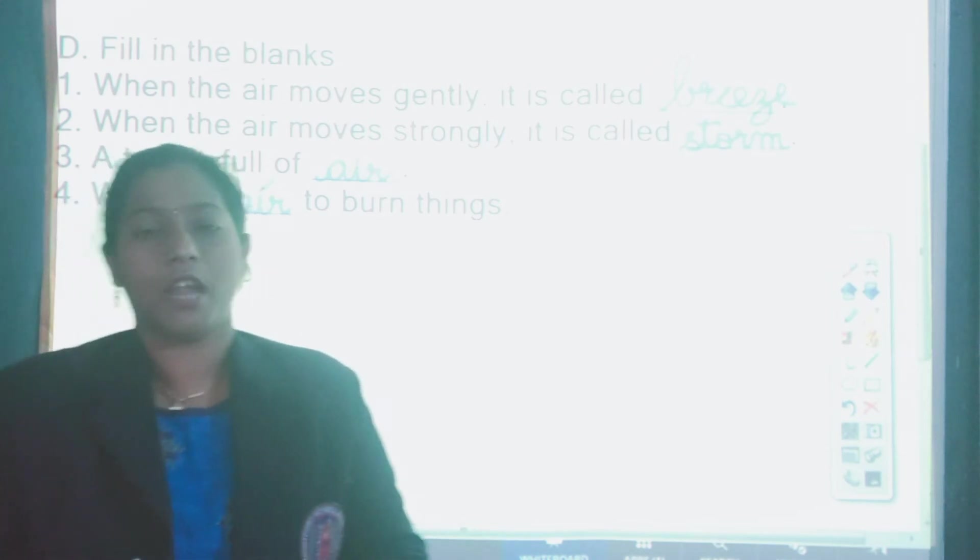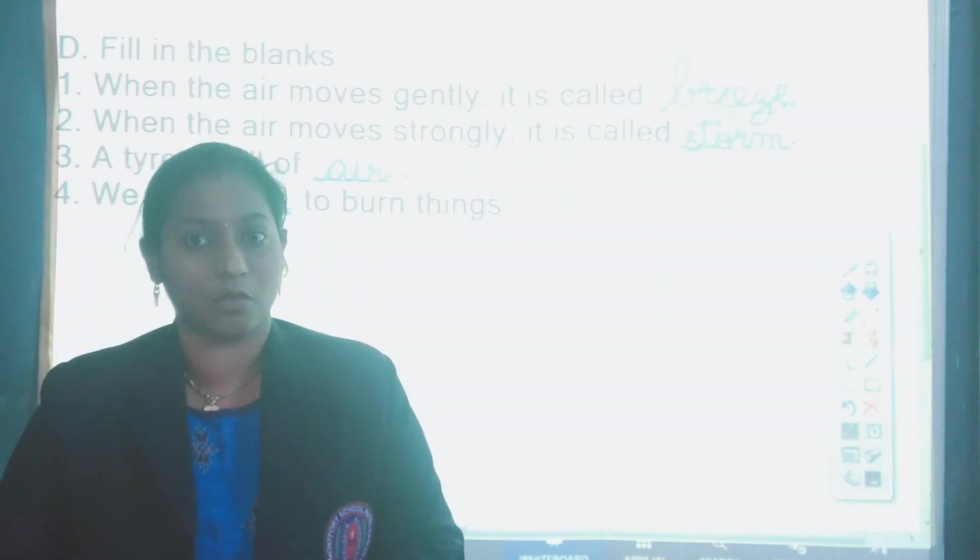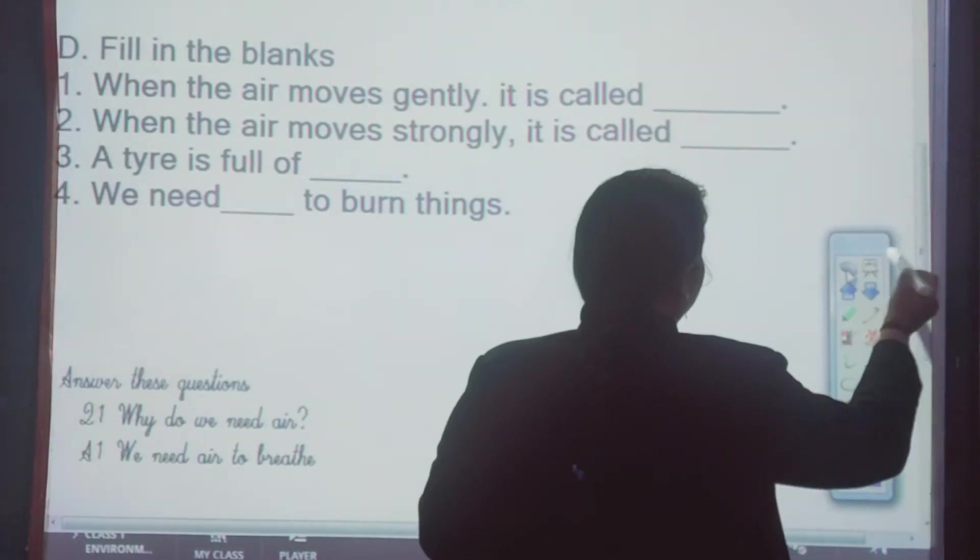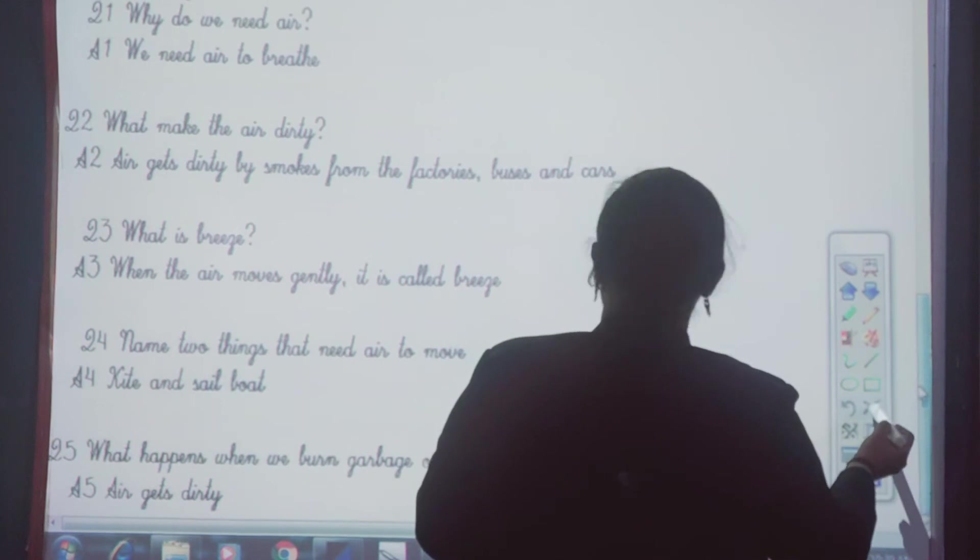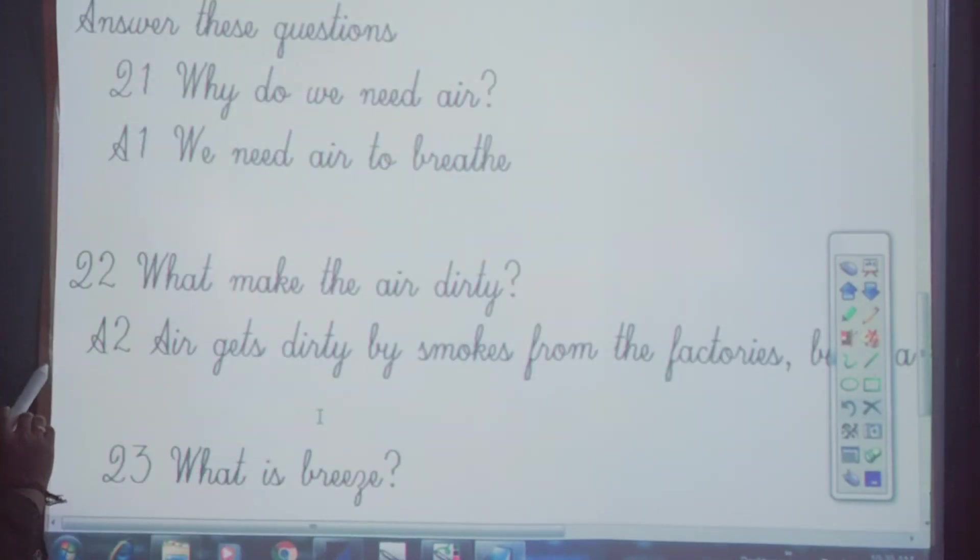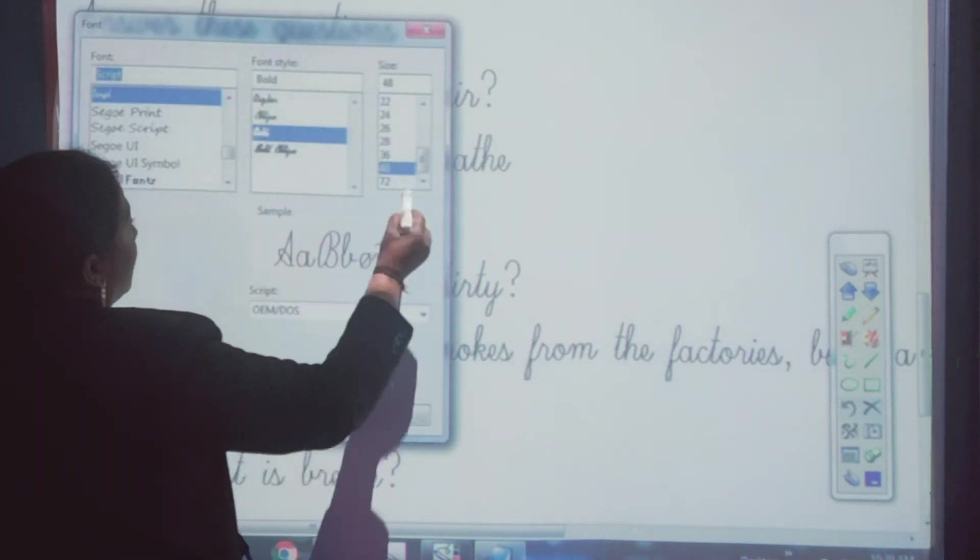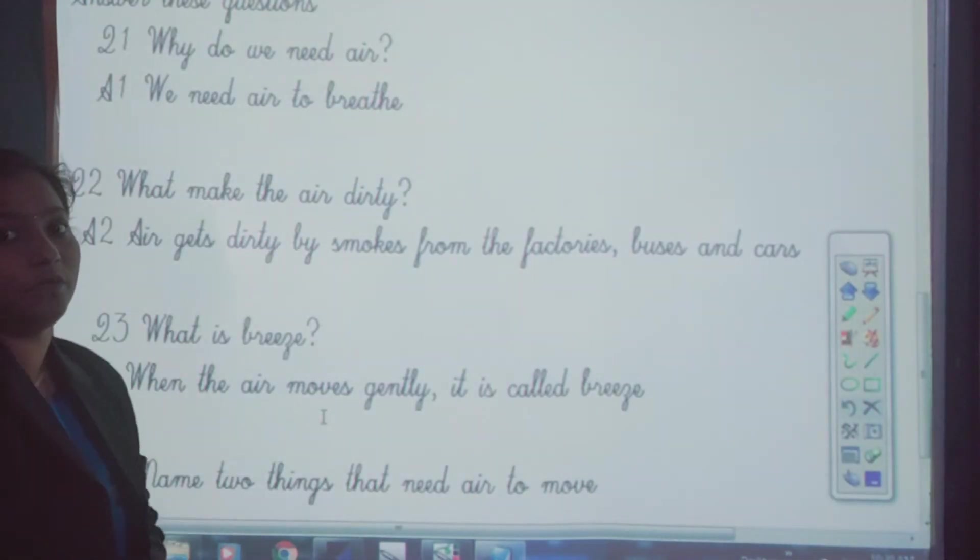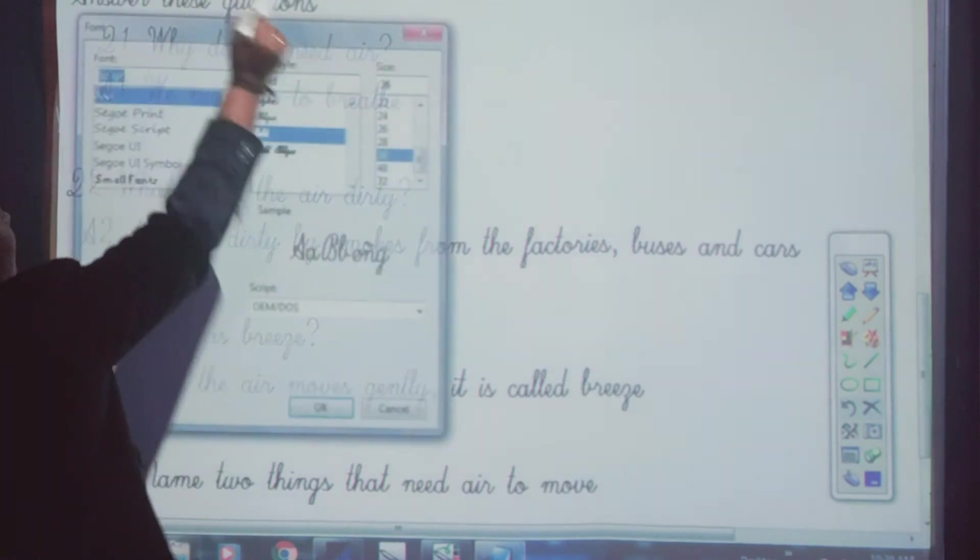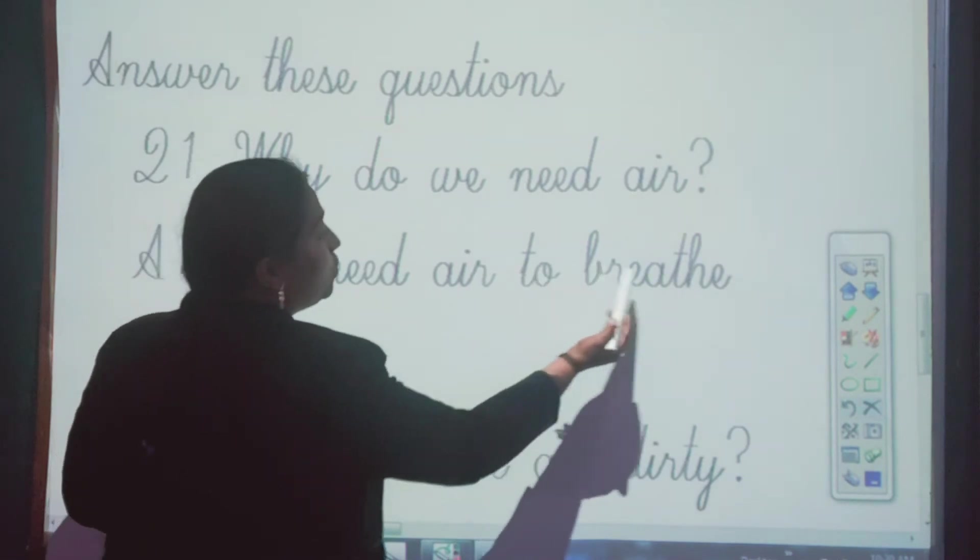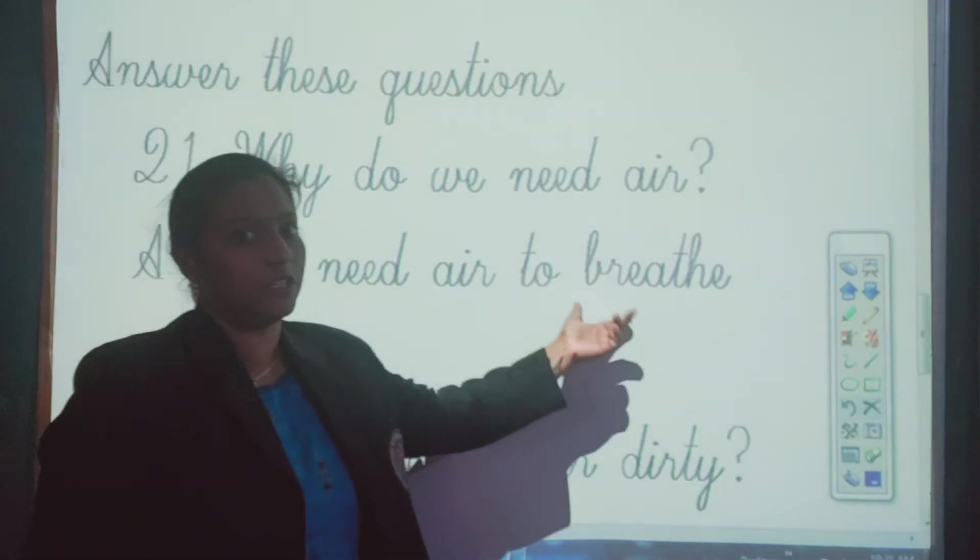So here we complete the fill in the blanks. Now we are going to do the question answers. We are going to read the question along with ma'am and we are going to answer also. So let's move quickly to the question answer that is the C part. The first question is why do we need air? Why do we need air? Hame air ki zarurat kyo hai? We need air to breathe. That is the simple answer. Hame air ki zarurat kyo hai? We need air to breathe.